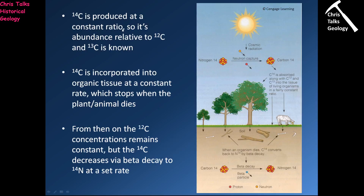Carbon-14 is produced at a constant rate — every day pretty much exactly the same amount is produced. So we know its abundance relative to carbon-12 and carbon-13, because the amount of carbon-14 in Earth's system doesn't really change. Any form of carbon gets incorporated into organic tissue at a constant rate, so we know how much carbon-14 is in the atmosphere and the rate at which it becomes incorporated into organic material — leaves, tree bark, muscle, skin. All of these things contain carbon, and some of that carbon will be carbon-14.